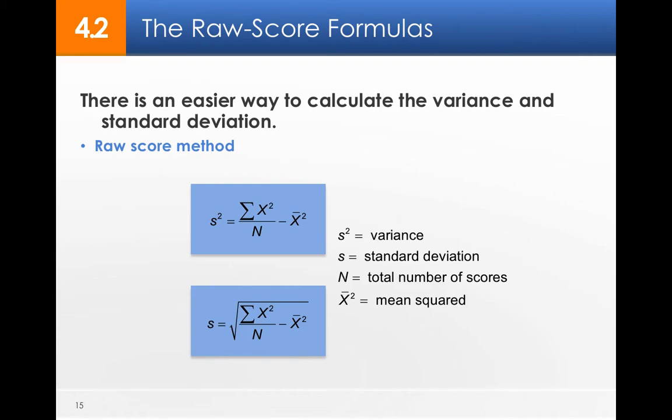There's an easier way to do this called the raw score method. So remember again, s squared is variance, and s is standard deviation. So for s squared, what we could do is we could take the sum of x squared, of all the x squared, divided by n, minus the square of the mean. And then standard deviation is just the square root of that.